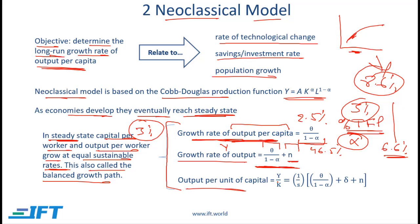The third formula is the output per unit of capital. For this relationship we start with the growth rate of output — theta over 1 minus alpha plus N — then add the depreciation rate, which is the overall depreciation of equipment in an economy, and then multiply the whole expression by 1 divided by S, where S is the savings rate. It is recommended that you memorize this formula, as there is a chance it will be tested on the exam.